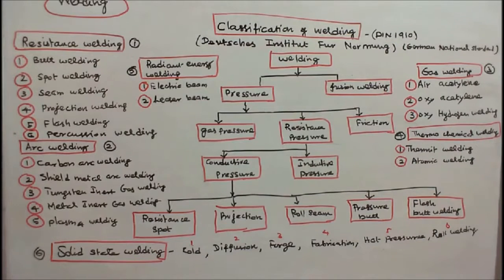There are five types of arc welding. One is carbon arc welding. Second is shielded metal arc welding. Third is tungsten inert gas welding or TIG welding. Fourth is metal inert gas welding or MIG welding. Fifth is plasma welding.